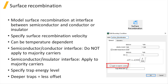Unlike conductors, when specifying the surface recombination properties for a semiconductor-insulator interface, it is correct to ensure that the Apply to Majority Carriers option is checked. This will ensure that the density of both the majority and minority carriers at the insulator interface are adjusted according to the surface recombination model.